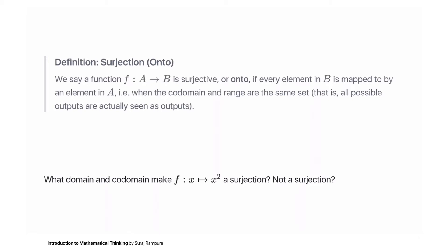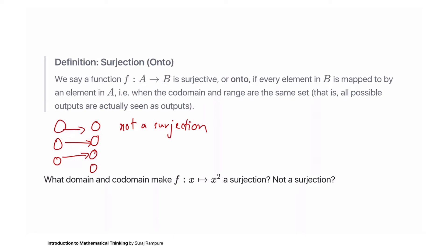Alternatively, a surjection is a function whose codomain and range are equal — all possible outputs are actually seen as outputs. This function drawn here is not a surjection; it is an injection because every input has a unique output, but this fourth element in the codomain has no input mapping to it. The range is only the three elements that actually have arrows pointing to them, so it is not a surjection.